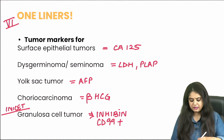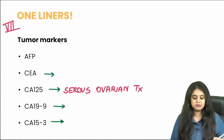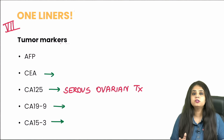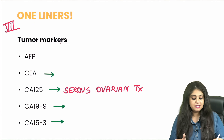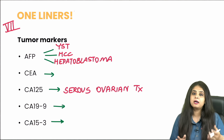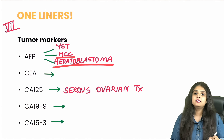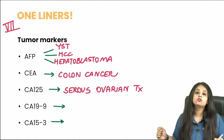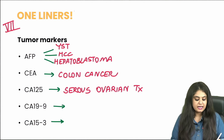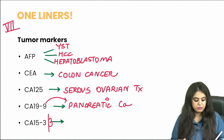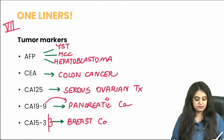Continuing with all tumor markers: CA125 is for serous ovarian tumors. Alpha-fetoprotein is for yolk sac tumor in the ovary and also for HCC and hepatoblastoma in the liver. CEA — C for C — is for colon cancer. CA19-9: flip the 9 to get a P, that is pancreatic cancer. CA15-3: from the 3 you get a B, that is breast cancer.